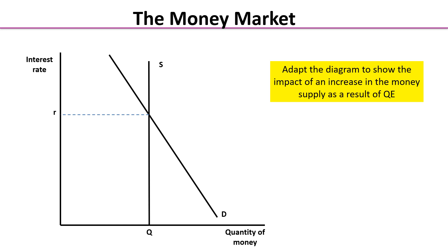Pause the video and show on the diagram the impact of an increase in the money supply. What we should see is a shift to the right of the money supply from S to S1. It still remains perfectly inelastic, but this has caused an extension along the demand curve and the interest rate has fallen accordingly from R to R1.